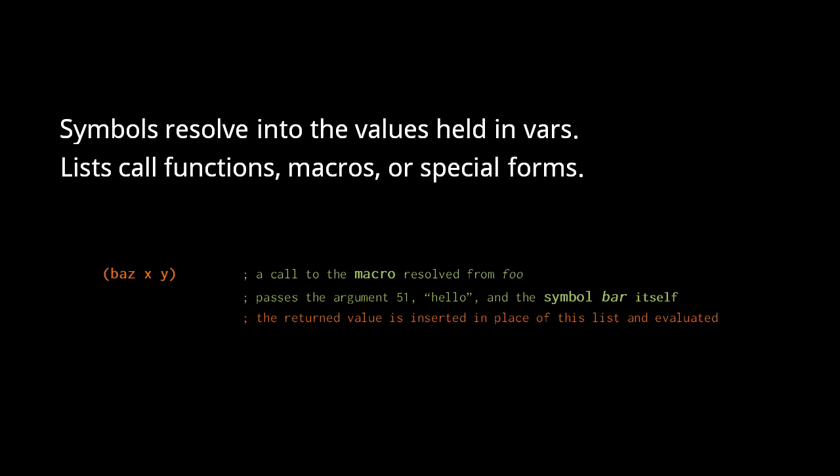Assuming baz resolves to a regular function, that function would be called with the resolved values of x and y's arguments. It's perfectly possible, however, for a macro to return a list which is itself another macro call, in which case the process repeats until a non-macro form is returned.